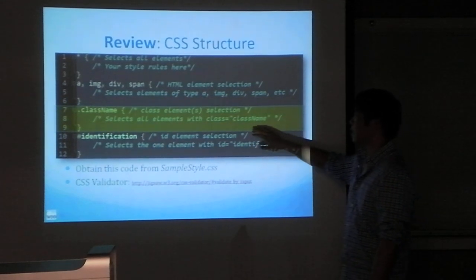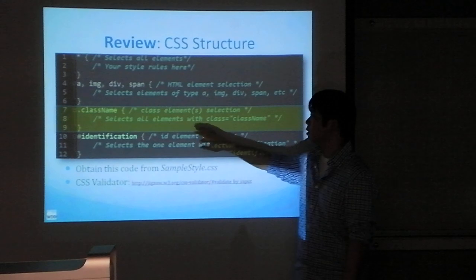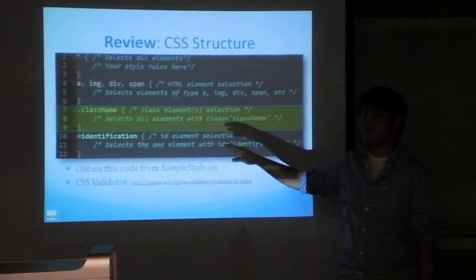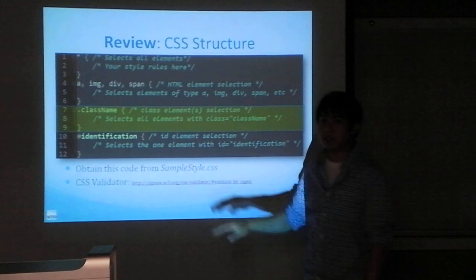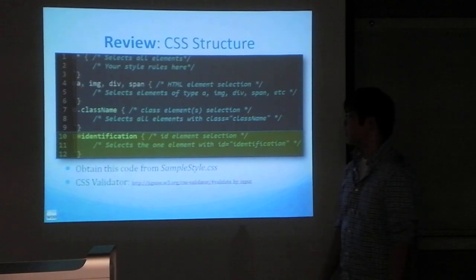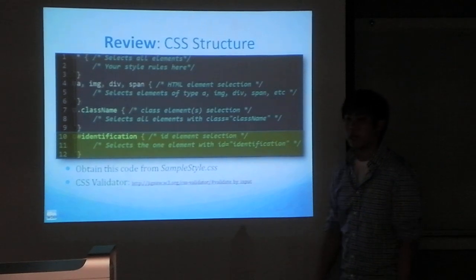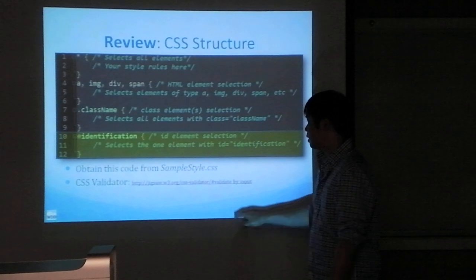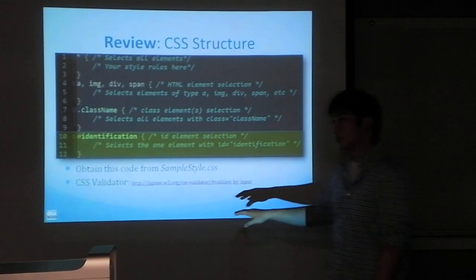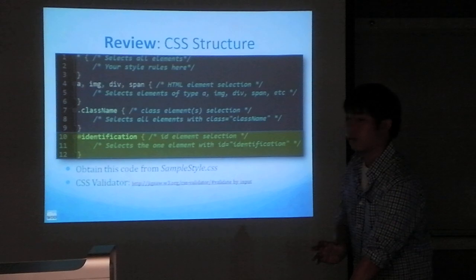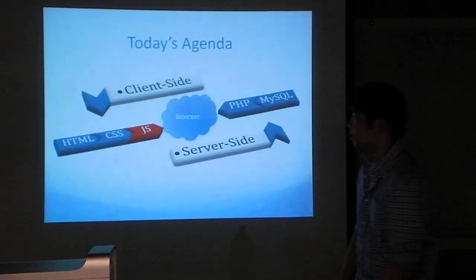Selecting by class name is pretty simple — a period at the beginning and the class name, and the rest looks like other CSS. ID selection is very similar, except that IDs are unique and are specified in CSS with a hash symbol. There's also a CSS validator that can help you figure out some problems, but of course it's not foolproof, just like the HTML validator.